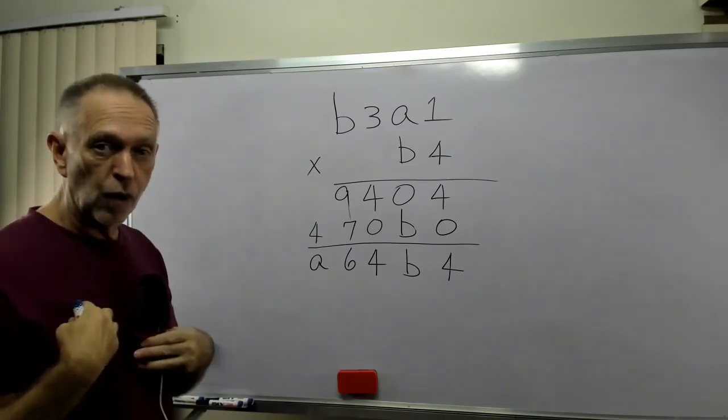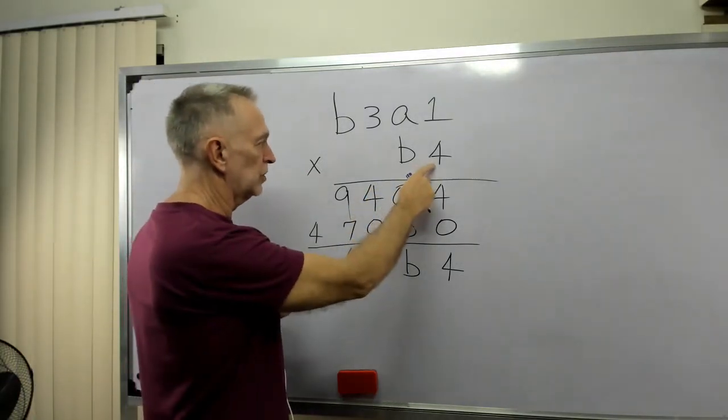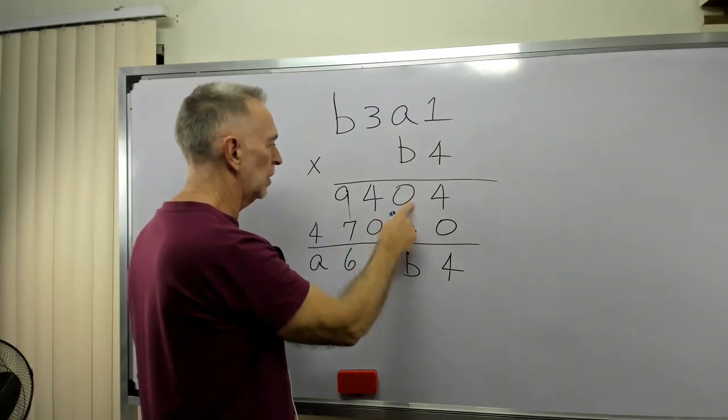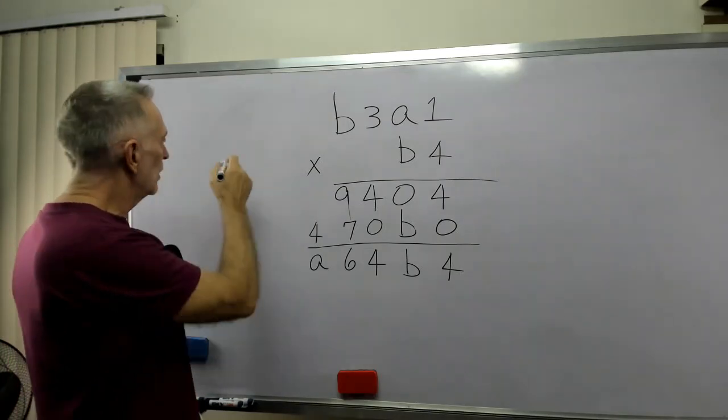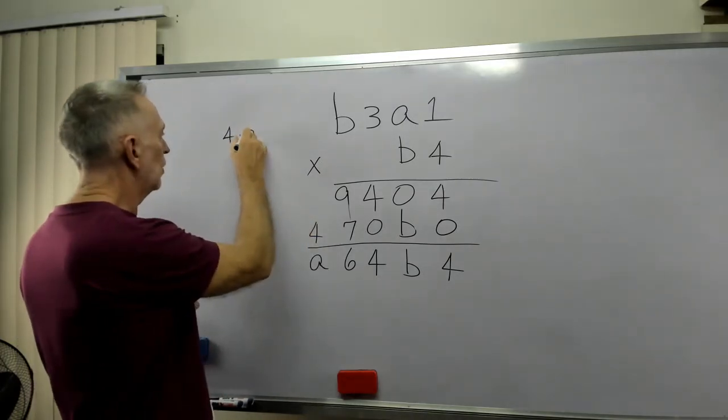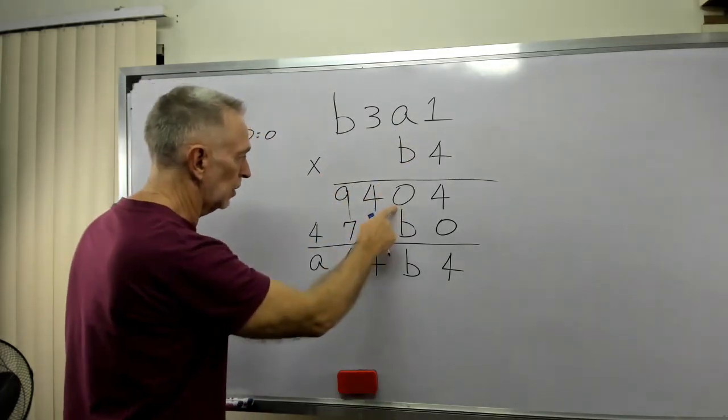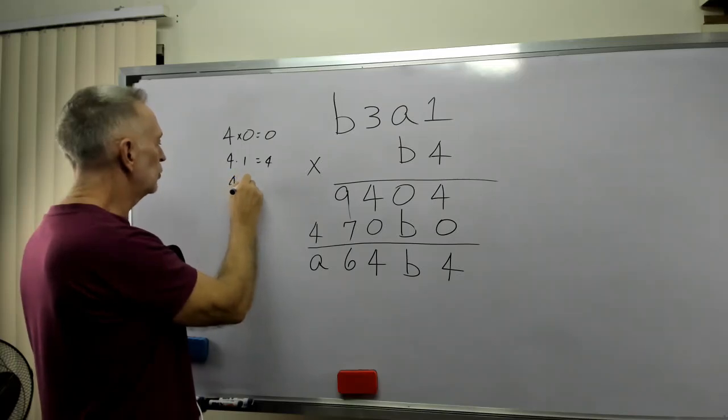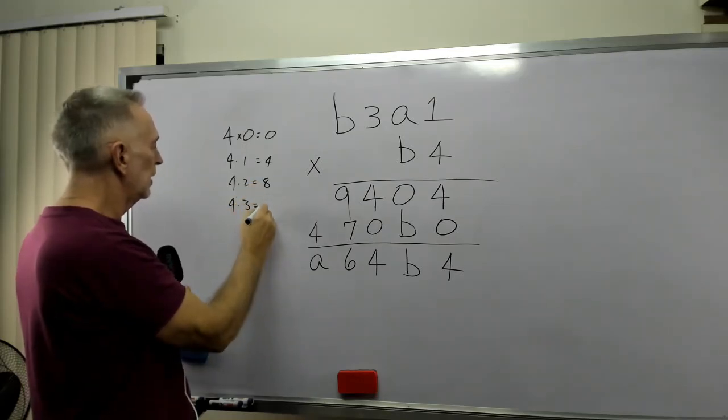I like to walk through the multiplication process that I would normally do. For example, 4 times 1 is 4. 4 times A is 0. Now what do we know? Well, if we look at multiples of 4, 4 times 0 is 0. So it could be that A is 0. 4 times 1 is 4. 4 times 2 is 8. And you'll notice I'm just putting a dot for the multiplication. 4 times 3 is 12.